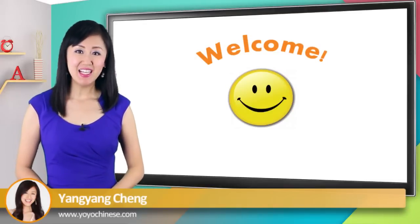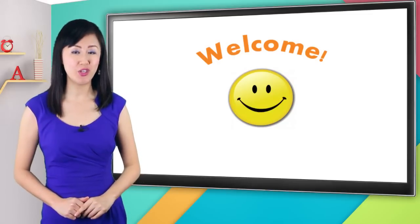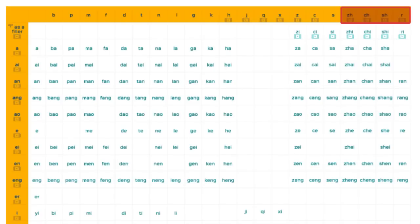Hello, ni hao, welcome back. In this lesson, we're going to learn how to pronounce four new initials or consonants. You can find those four initials at the end of the initials row at the top of the pinyin chart. They're spelled zh, ch, sh, and r.